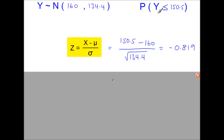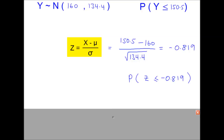To standardize 150.5, we subtract the mean of 160 and divide by the standard deviation. Since 134.4 is a variance, we take the square root. This gives us our Z value, and we are now looking for the probability that Z is less than or equal to minus 0.819.